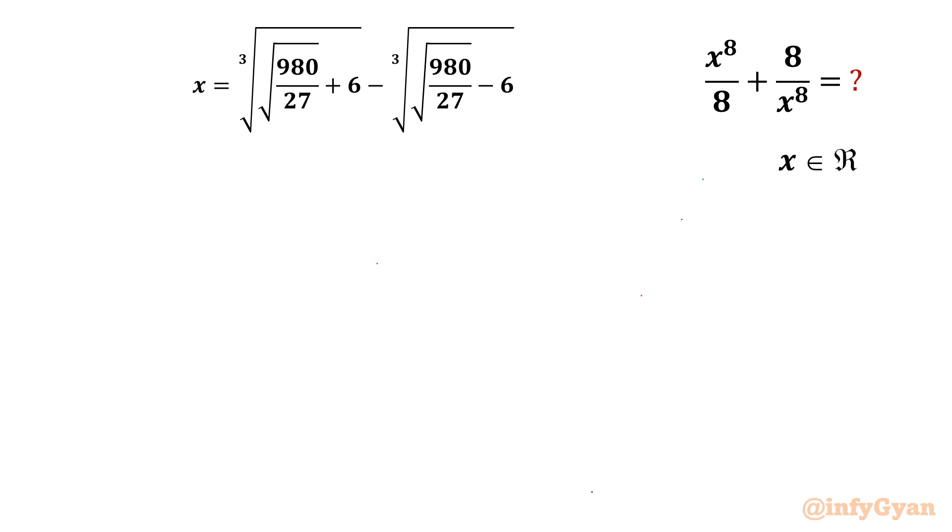Here we have x which is cube root of square root 980 over 27 plus 6 minus cube root of square root 980 over 27 minus 6. And we have to evaluate the expression x power 8 over 8 plus 8 over x power 8, where x is a real number.